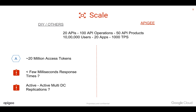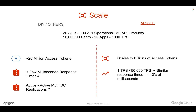Think about replicating these tokens in active-active mode across multiple data centers, because you have customers spanning different geographical locations. Apigee Edge can scale to billions of access tokens and can verify a token in less than a few tens of milliseconds, whether it's one transaction per second or 50,000 transactions per second. Apigee Edge automatically replicates these tokens across data centers and gives access to the backend API resources.